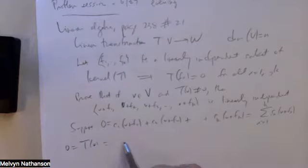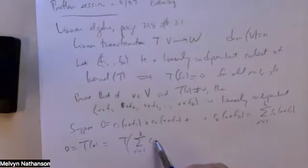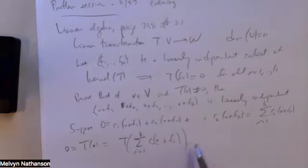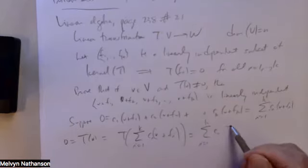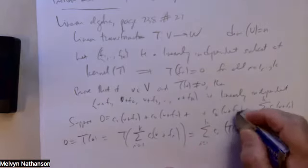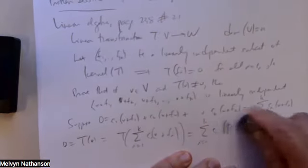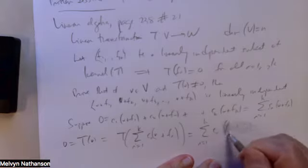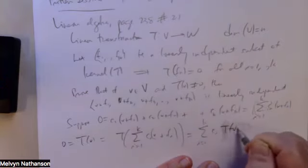T of zero is always zero. So T of zero equals T of this sum — summation from i equals one to K of C sub i times (V plus F sub i) — which, because T is a linear transformation, equals the summation from i equals one to K of C sub i times T of (V plus F sub i).